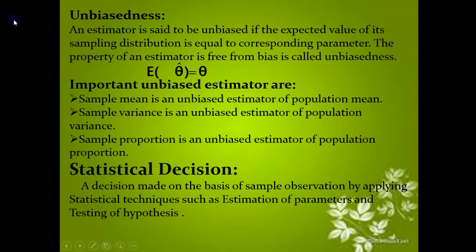Properties of a good point estimator include unbiasedness. For example, the sample proportion is an unbiased estimator of the population proportion, and the sample variance sigma-squared is an unbiased estimator of the population variance.